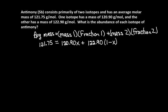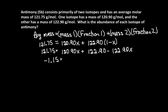So let's go through the algebra. 121.75 is equal to 120.90X plus 122.90 minus 122.90X. So minus 1.15 is equal to minus 2X. So X is equal to 0.575.